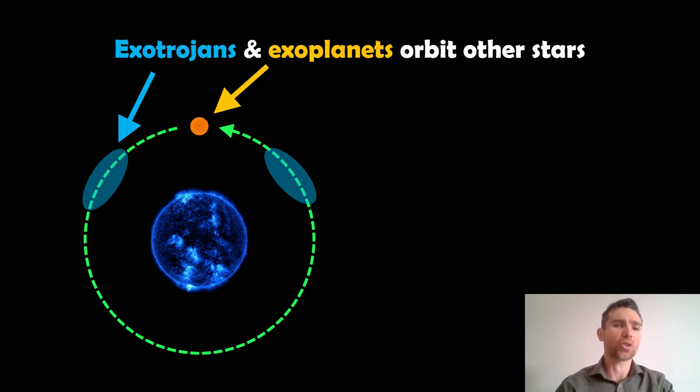And these exotrojans exist coorbitally. That means they are on the same orbit as the exoplanet. So that's what we mean by these Trojan objects. And before we look at how we can detect those, we need to define what they actually are first.